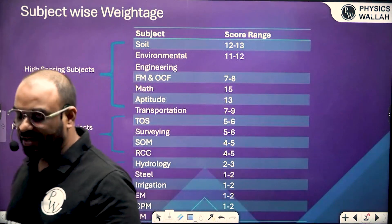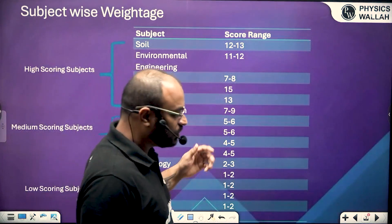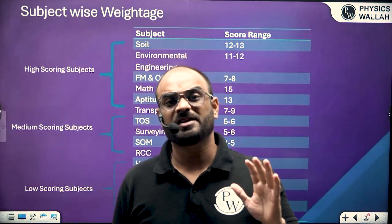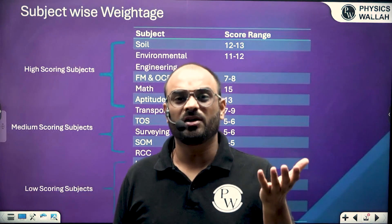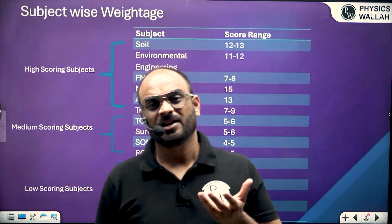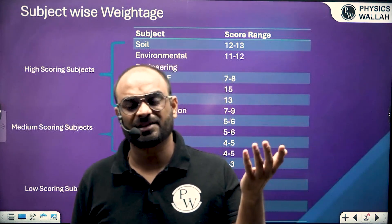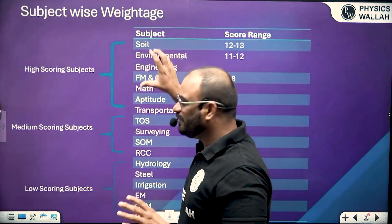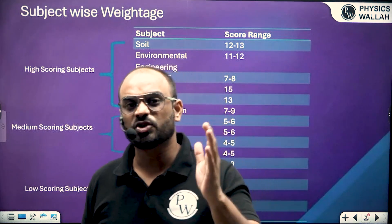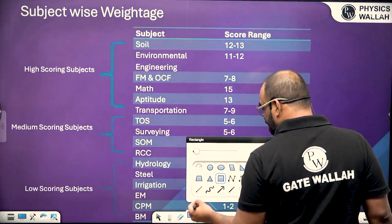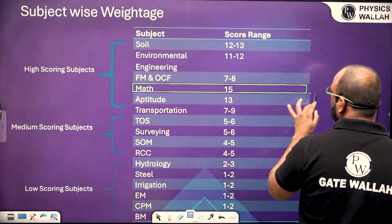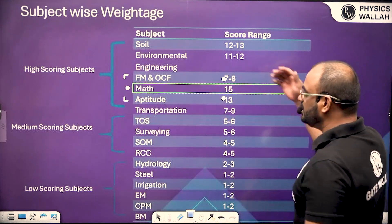The question is: can we go directly with the high scoring subject — can we directly try to learn soil mechanics and environmental engineering? You can do it if your basics or fundamentals are very strong — if you know engineering mathematics well, some basic concepts of strength of material, and the fundamental of forces and moments. Then you can go with any high-weightage subject.